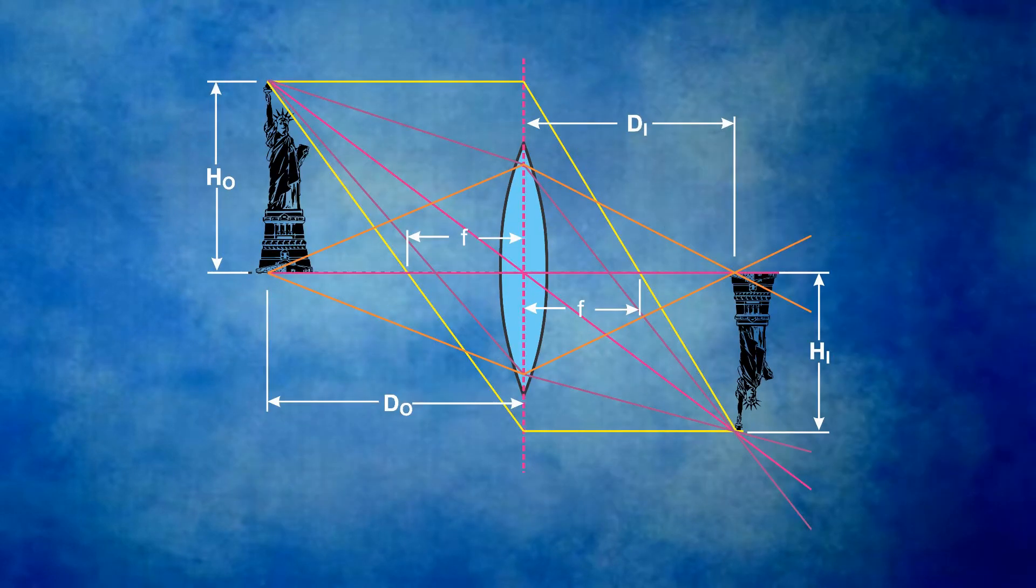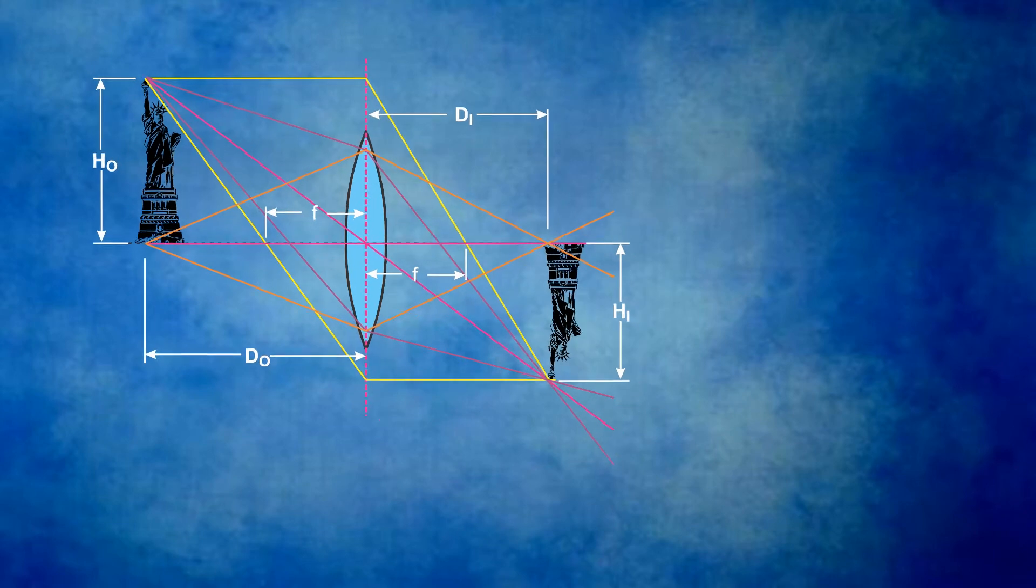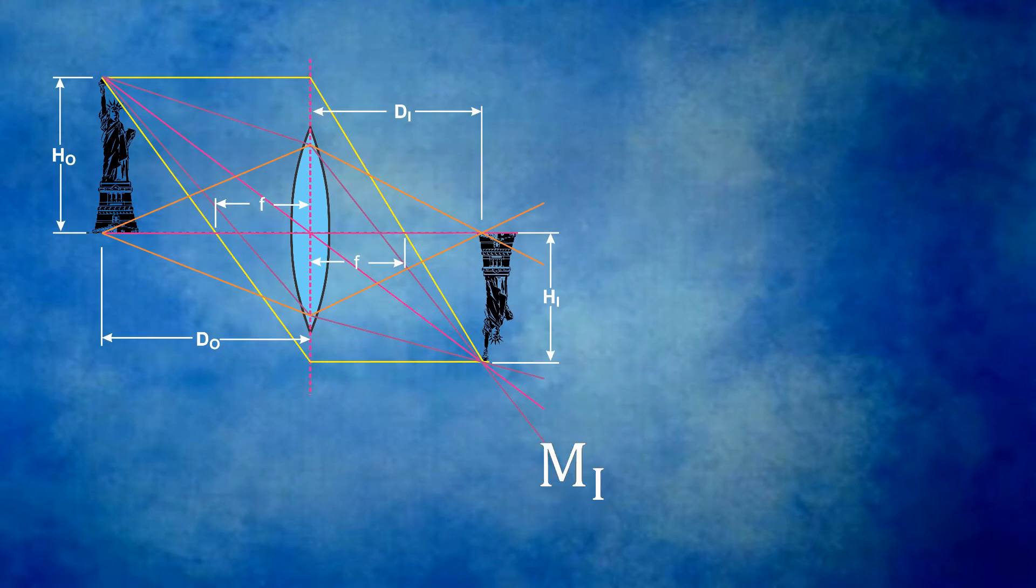Now we examine some useful formulas for lenses. First is the definition of magnification. We will talk about the image magnification, denoted M sub I. It is simply the ratio of the image height to the object height. Some people have come to call this the primary magnification, spelled P-M-A-G and pronounced P-MAG.